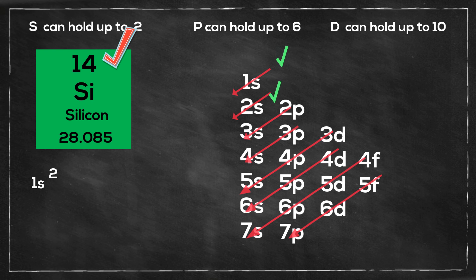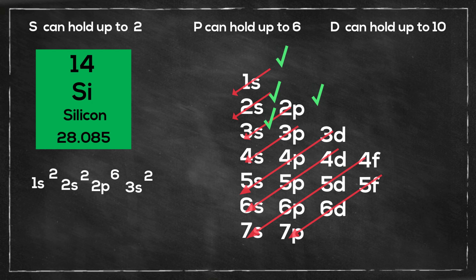Then move to the 2s, 2s2, then move to the 2p, 2p6, then move to the 3s, 3s2. And that leaves me with two more, so it will be 3p2. And here it is written using the noble gas.